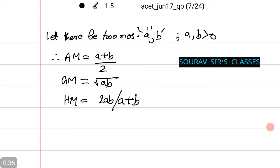Now, let there be two numbers a, b where a and b is greater than zero. Therefore, arithmetic mean equals the average a plus b by 2. Geometric mean is square root of a into b, and 2ab by a plus b equals the HM.